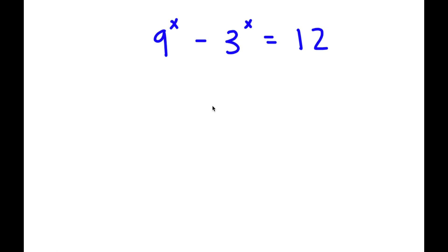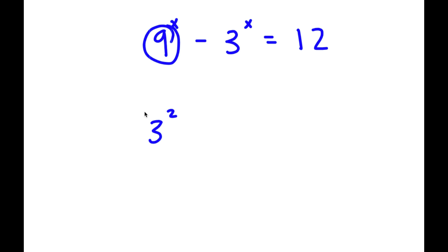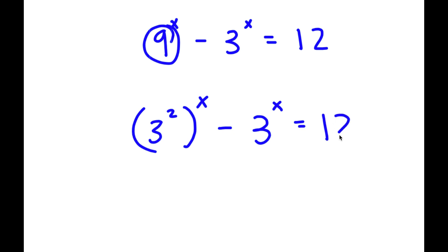In this problem, I have 9 to the power of x minus 3 to the power of x is equal to 12. To solve this, I'm going to first start by rewriting 9 here as 3 squared. So now I have 3 squared to the power of x minus 3 to the power of x is equal to 12.